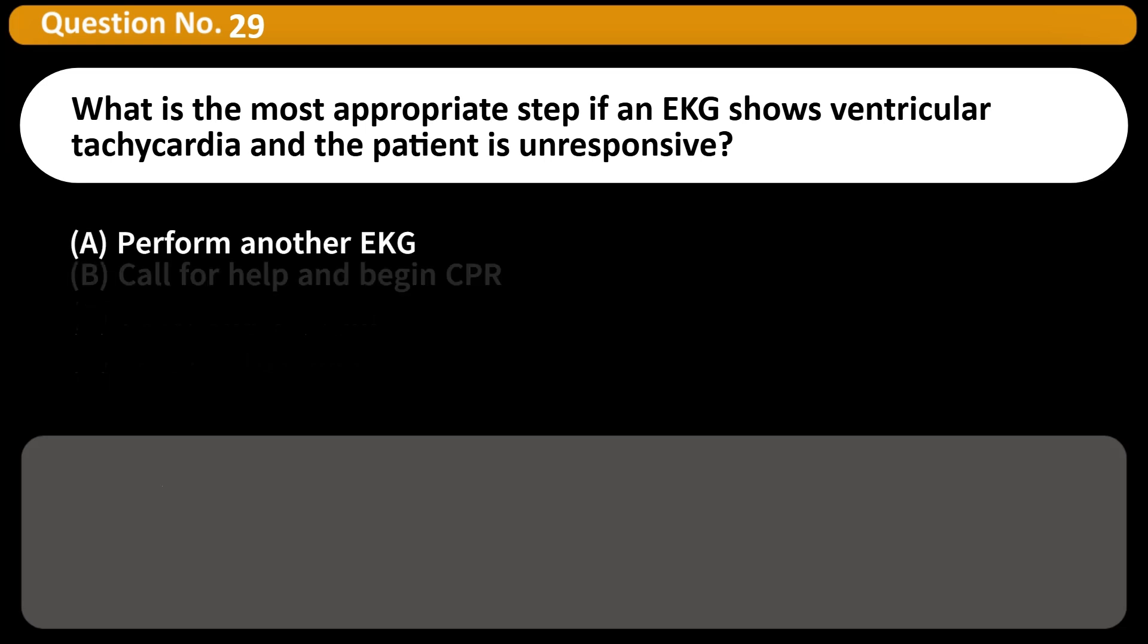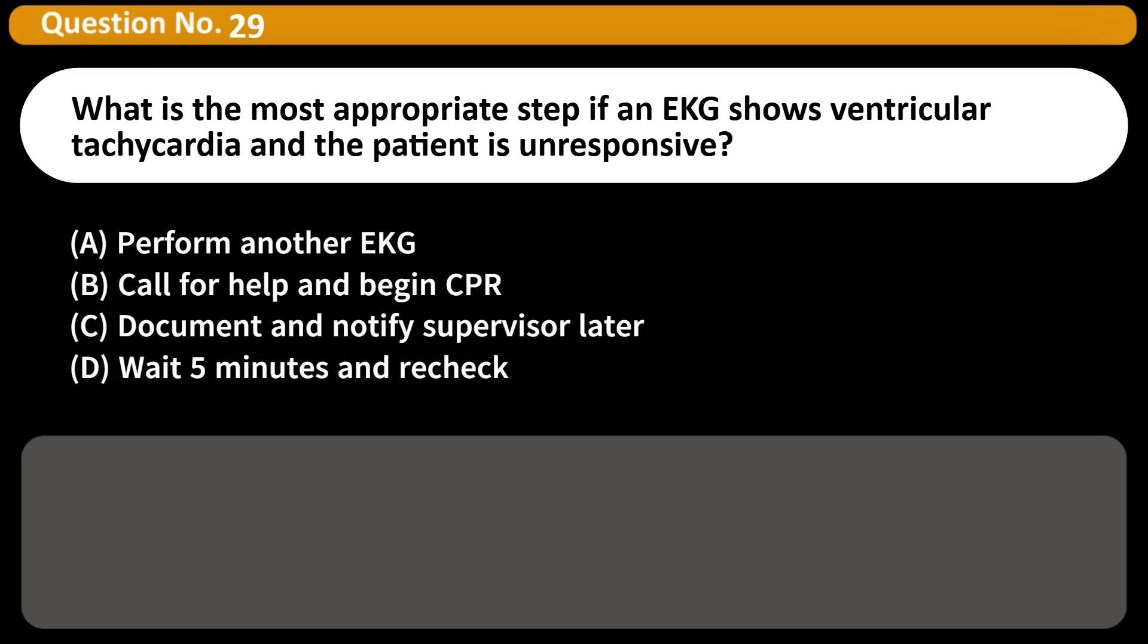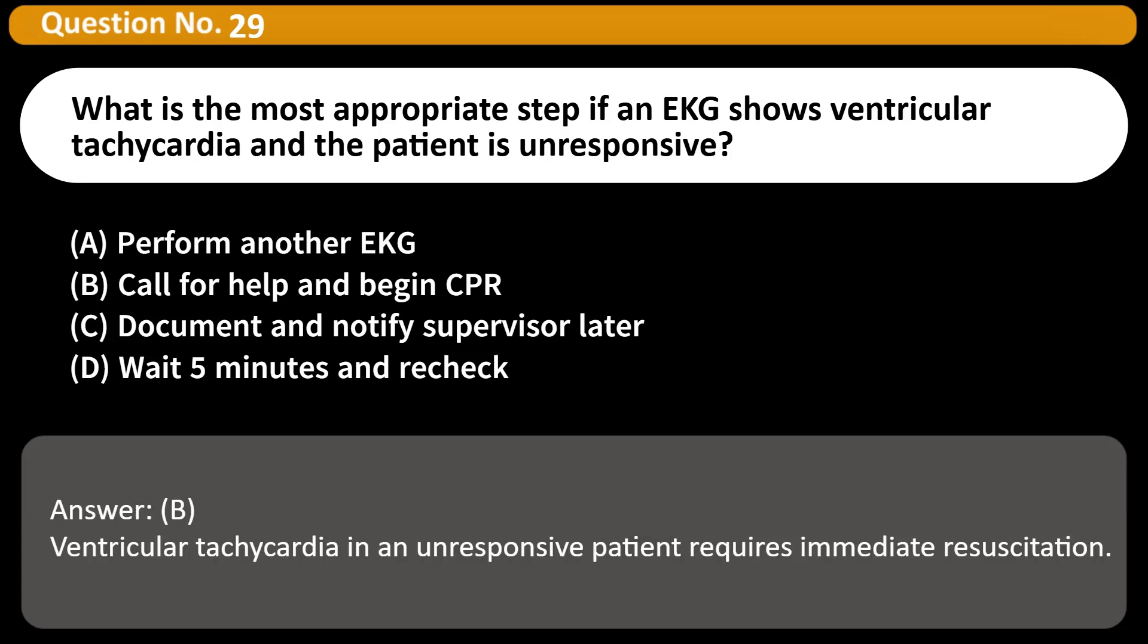What is the most appropriate step if an EKG shows ventricular tachycardia and the patient is unresponsive? A. Perform another EKG B. Call for help and begin CPR C. Document and notify supervisor later D. Wait 5 minutes and recheck Answer B. Ventricular tachycardia in an unresponsive patient requires immediate resuscitation.